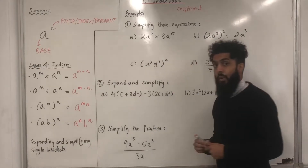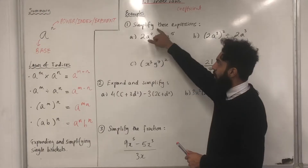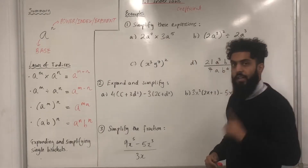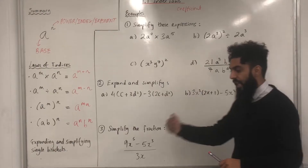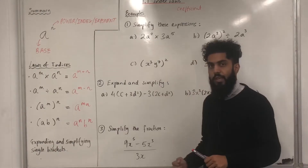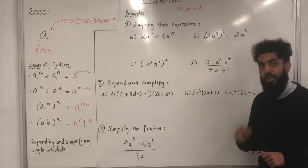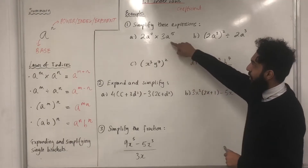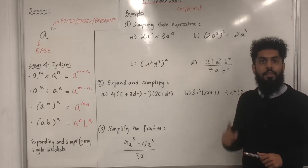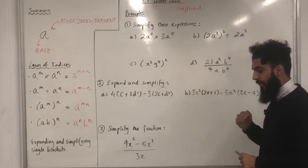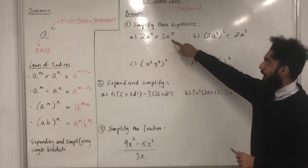A possible question in the exam could be: what is the coefficient of the A to the power 4 term? The coefficient is just the number in front of the A to the power 4 term — in this case, 2. Another question could be: what is the coefficient of the A to the power 5 term? The coefficient is just the number in front — in this case, 3.